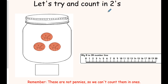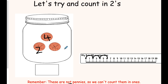Let's try and count in twos. We've got these two-pence coins. Remember, these are not pennies, so we can't count them in ones — we need to count them in twos. Each coin represents two. So because there are three coins, we can do this on the number line: two, four, six. We're doing three jumps but in twos. So that means I have six pence.